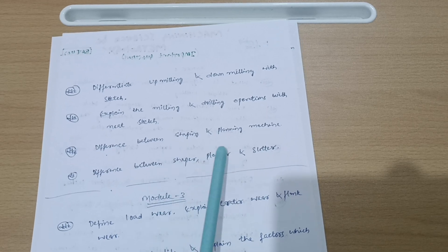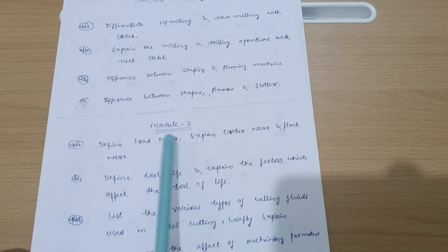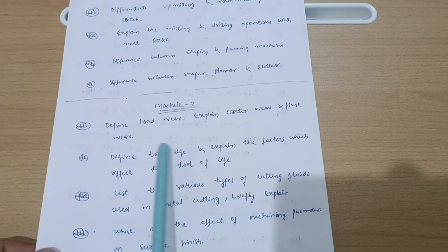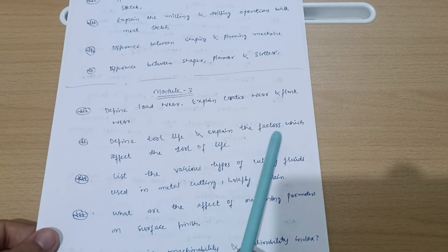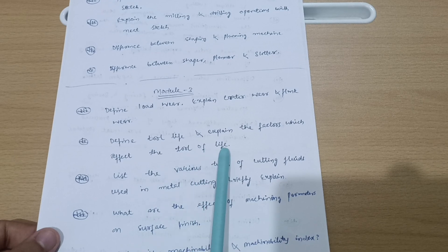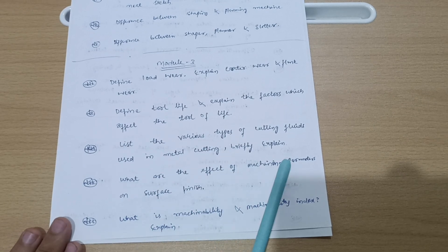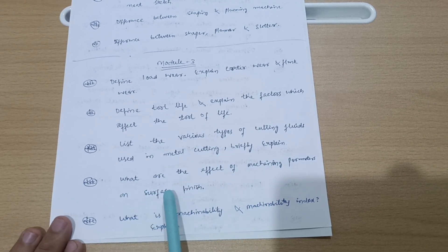Now if I come to Module 3: Define tool wear. Explain crater wear and flank wear. Define tool life and explain the factors which affect the tool life. List the various types of cutting fluids used in metal cutting.